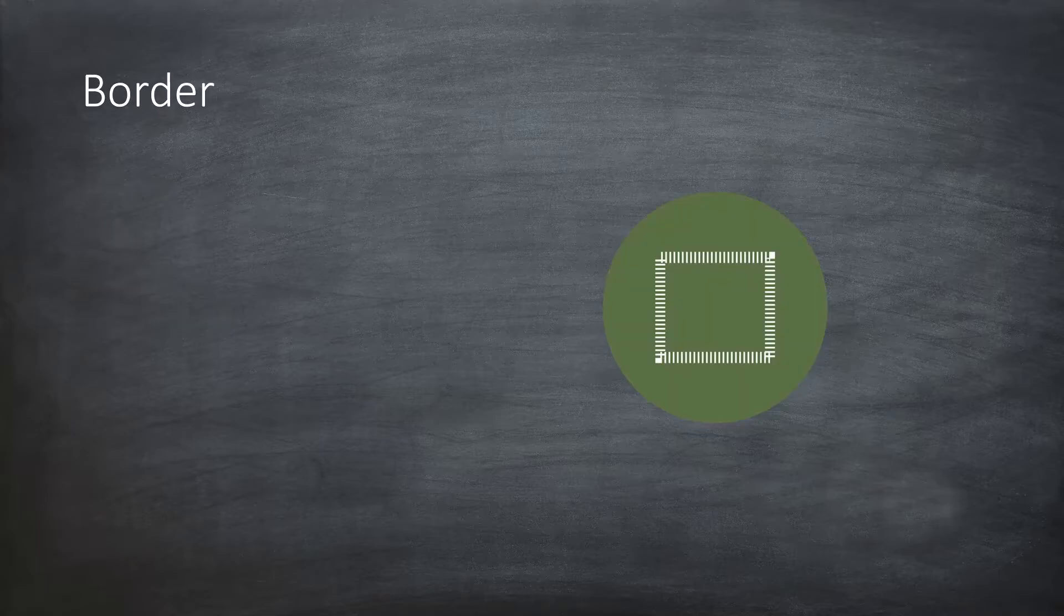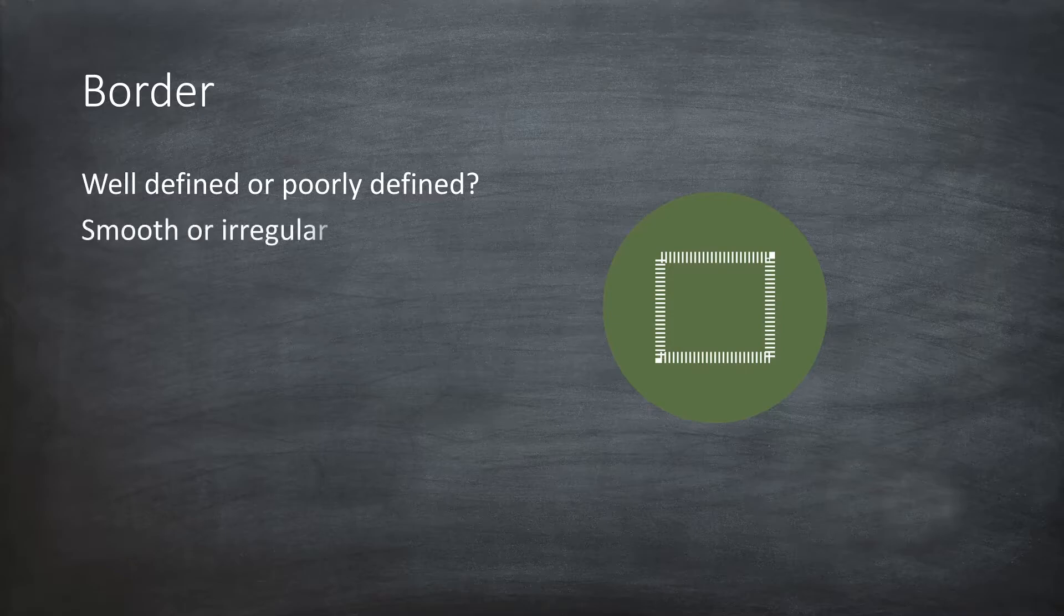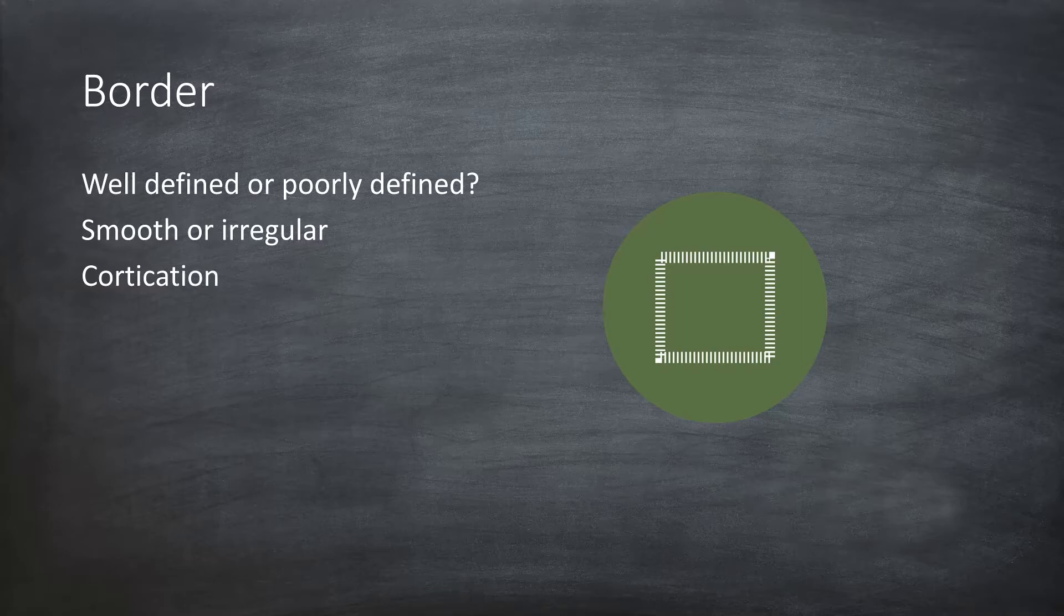The border of the lesion is another critical clue to the diagnosis. Is the lesion well-defined or poorly defined? Is the margin smooth or irregular? Malignancy and infection often have irregular margins. Is the lesion well-corticated?